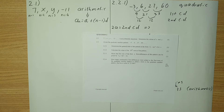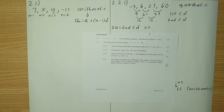With question two in Maths Paper 1 it's always going to be your sequences and series. Just a quick reminder of the difference between a sequence and a series: a sequence is a set of numbers with a relationship between the numbers, and a series is the sum of the set of numbers in a sequence.